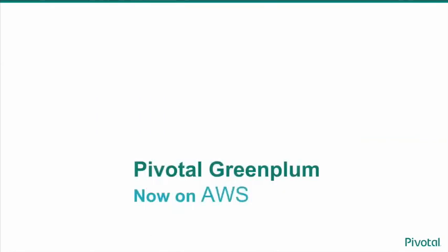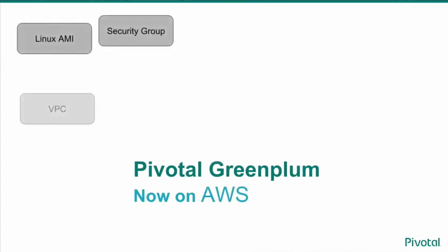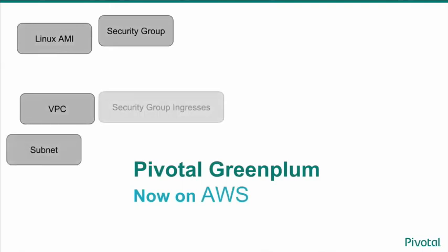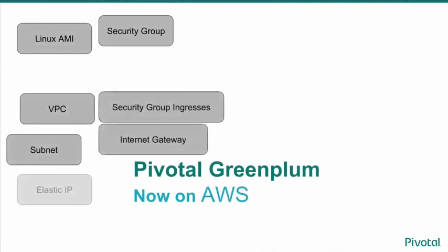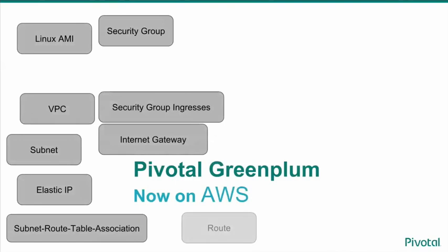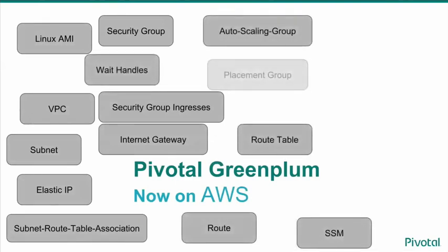If Pivotal decided to run Greenplum — now available on AWS — customers may have the same type of experience, with all the different components and resources necessary to deploy Greenplum in a cloud environment such as Amazon being very frustrating. There are many, many resources necessary: Linux AMI, Security Group, VPC — all these different terms and interdependencies are all necessary to deploy Greenplum in Amazon.